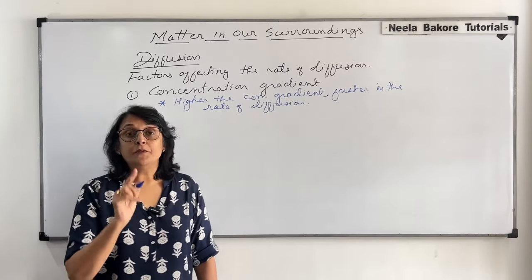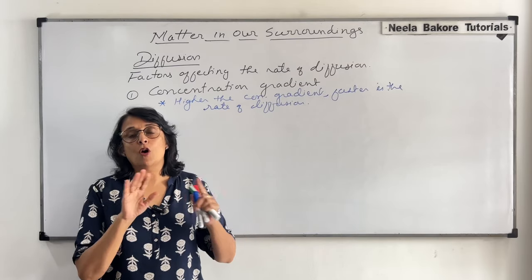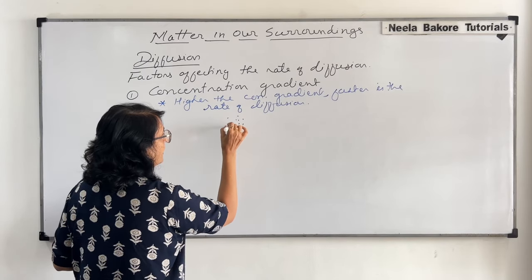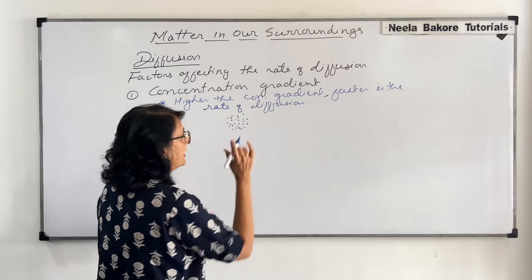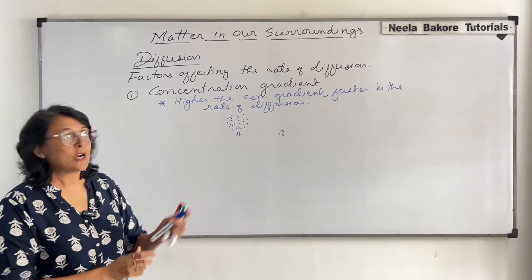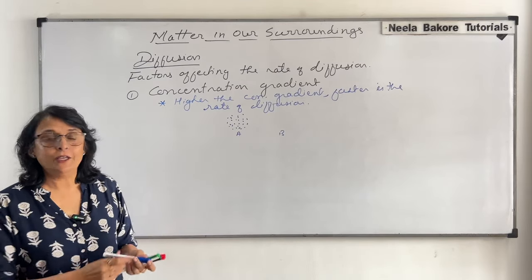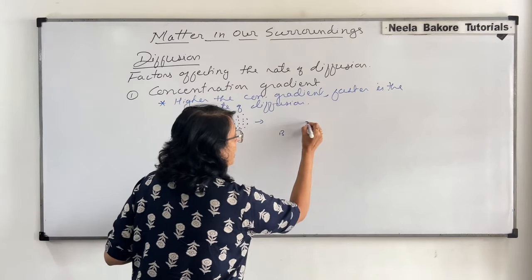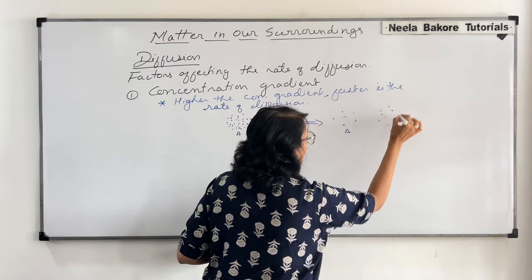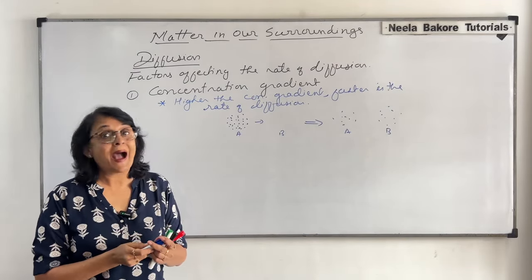Because we know that diffusion is a passive process, and it takes place until in the two areas the concentration of particles becomes equal. Suppose we take an area A where there are too many particles and area B where there are none. Diffusion will start — the particles will start moving from the region where the concentration is high to where there are no particles. This will continue and after some time, area A and area B will have pretty much the same concentration.